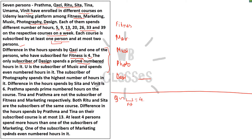One person is a subscriber of Music and spends an even number of hours in it — that would be 20 or 26. The subscriber of Photography spends the highest number of hours in it — that person spends 39 hours. After that, the difference in the hours spent by Sita and Vineet is 6.